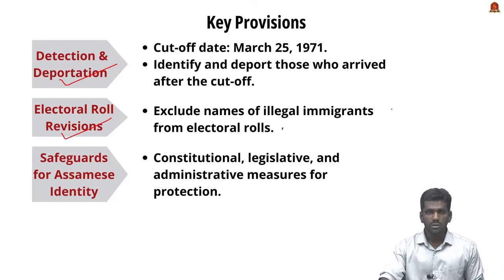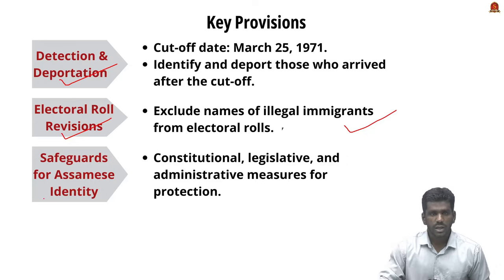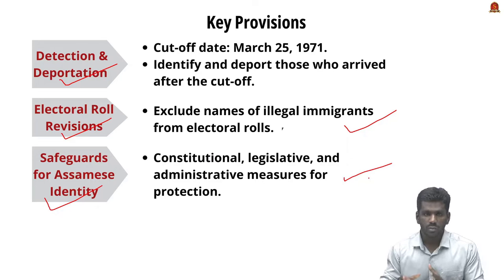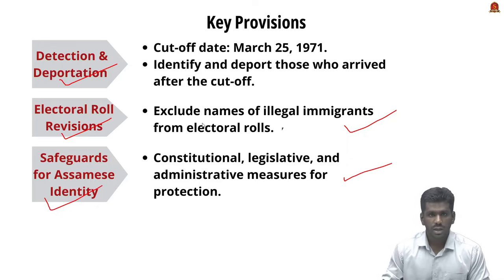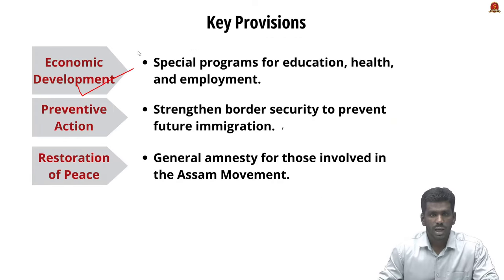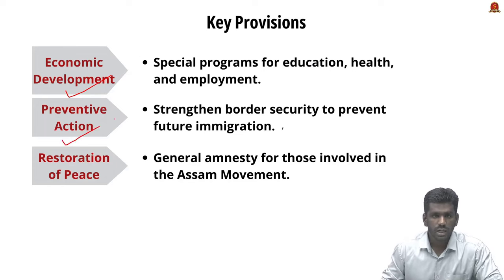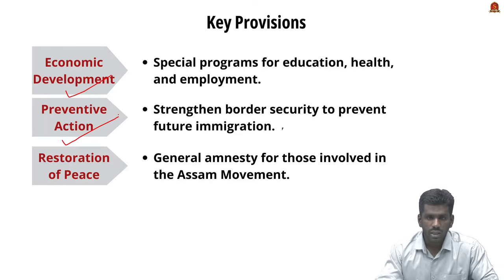Further provisions include: electoral roll revision — the Assam Accord mandated updating Assam's electoral rolls to exclude those who entered illegally after the cut-off date. Safeguards for Assamese identity and culture — the Government of India promised constitutional, legislative, and administrative measures to protect the cultural and linguistic identity of the indigenous Assamese people. Economic development — the accord promised to accelerate Assam's development through special programs in education, health, and employment.